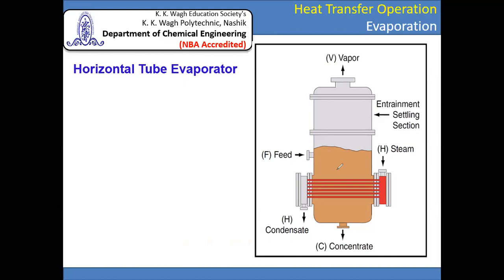The main advantage of the horizontal tube evaporator is very low headroom requirement and a large vapour-liquid disengaging area, which gives a higher rate of vapour formation. The main application is for small capacity services and simpler concentration problems — for processes where the final product is a liquor, such as industrial syrups.